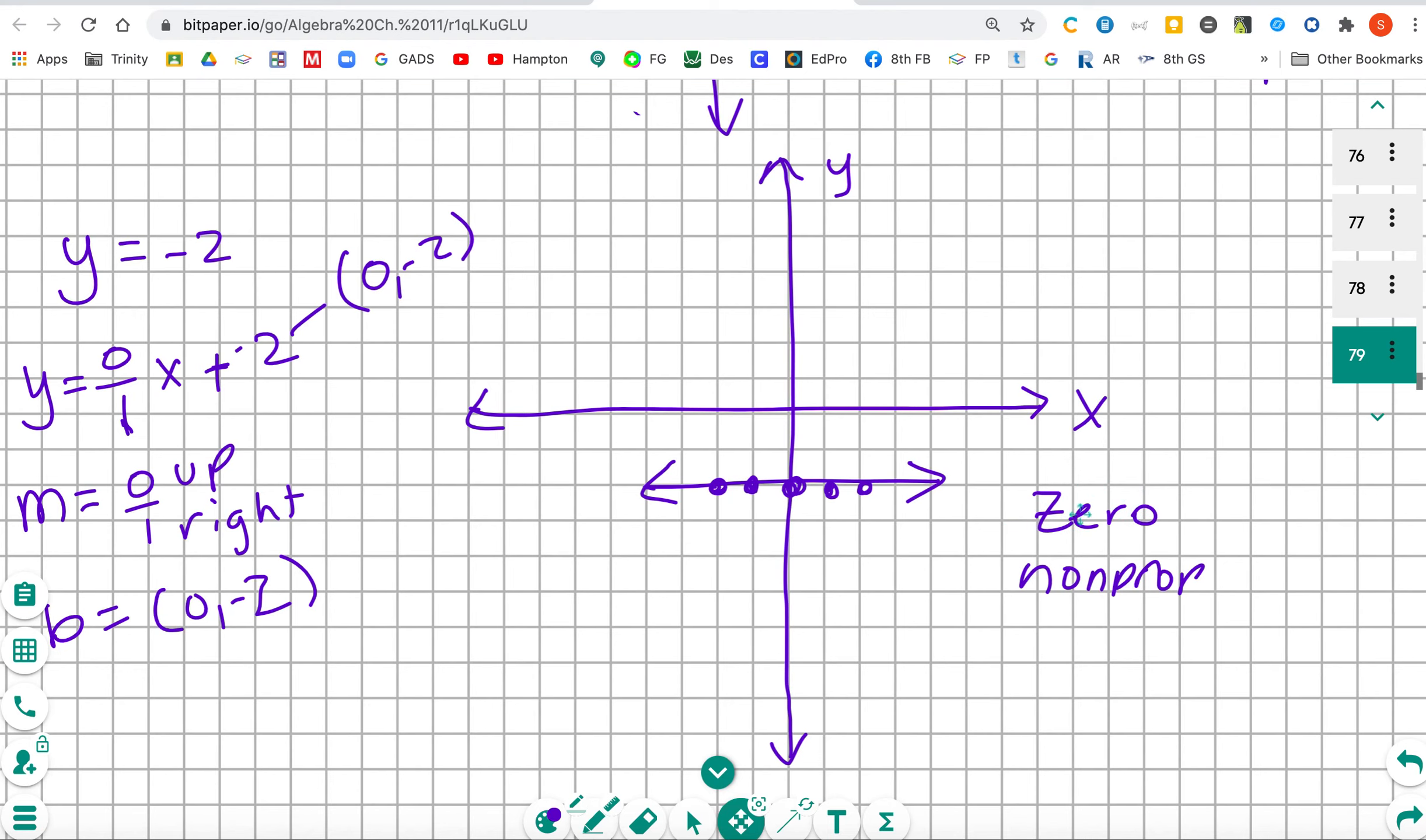This slope is a 0 slope, non-proportional. And now you have finished reviewing for the quiz.